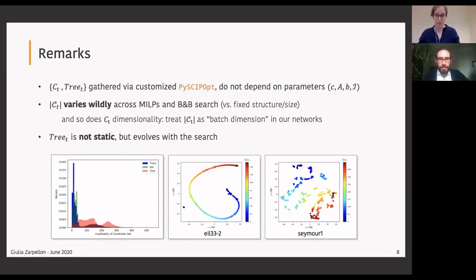It goes from blue, which is zero, which is basically the root node, to the number of explored nodes for that run. So it's the tree state how it was from the root node on in the other nodes. In X, for example, in the EIL 33 dash two instance, that's a very clear sort of evolution, very like a continuous motion for it.